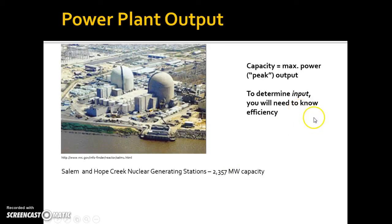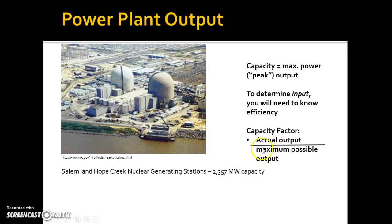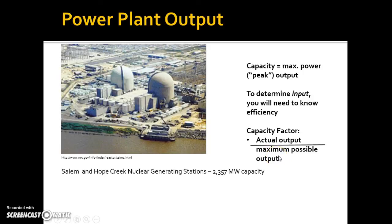Another consideration: if you want to look at total generation over a period of time, you need something called the capacity factor. The capacity factor is your actual output over the maximum possible output over a period of time. Because of downtime — repairs, maintenance, or unexpected issues — a plant won't put out 100% of its capacity every hour all year long. The capacity factor tells you what percentage of maximum possible output you're actually getting, and it's important for both non-renewable and renewable energy sources.